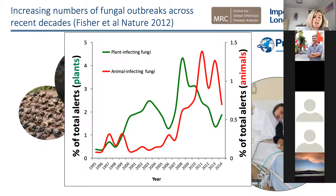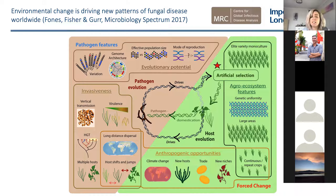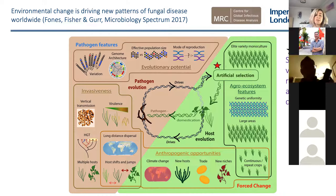We want to figure out what's driving that. Matt collaborates with Sarah Gurr and came up with a schematic of how environmental change is driving new patterns of fungal disease worldwide. We can get selection for virulence and resistance to antifungal chemicals artificially through the way that we farm — through monoculture, genetic uniformity over large areas, and using similar drugs to what we use medically.